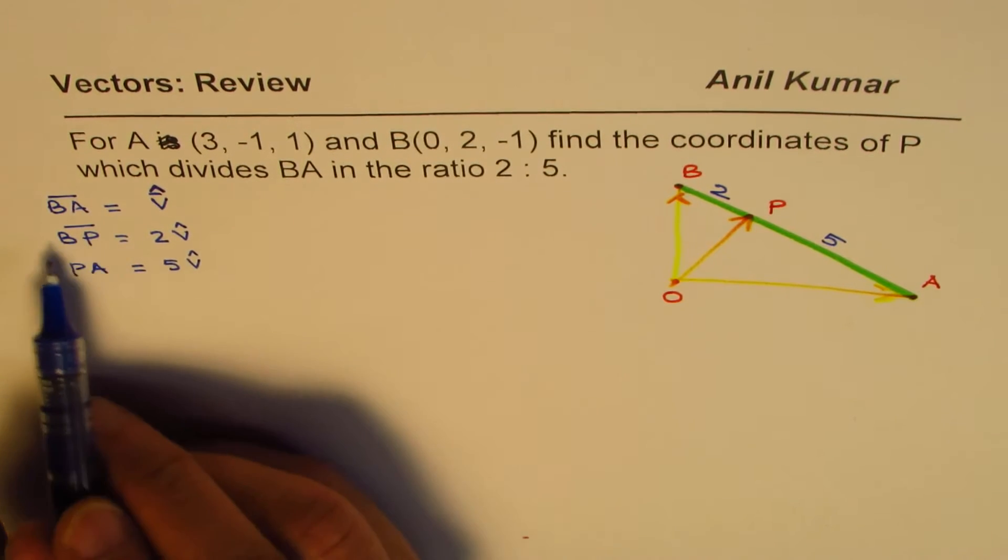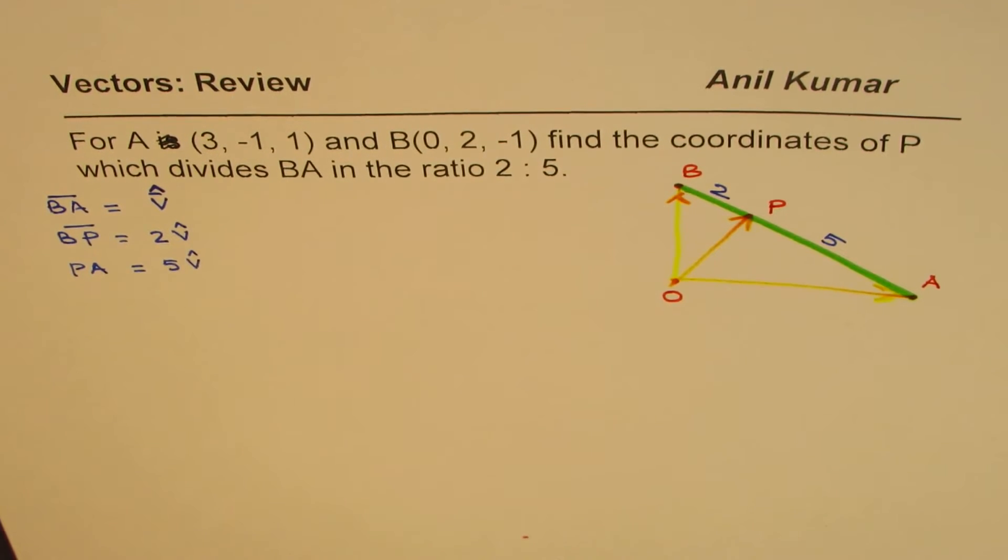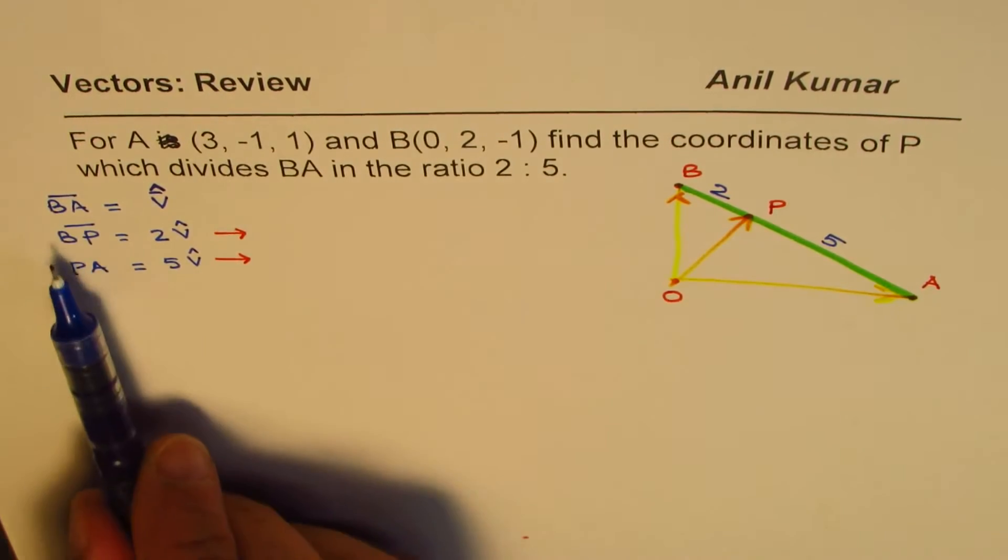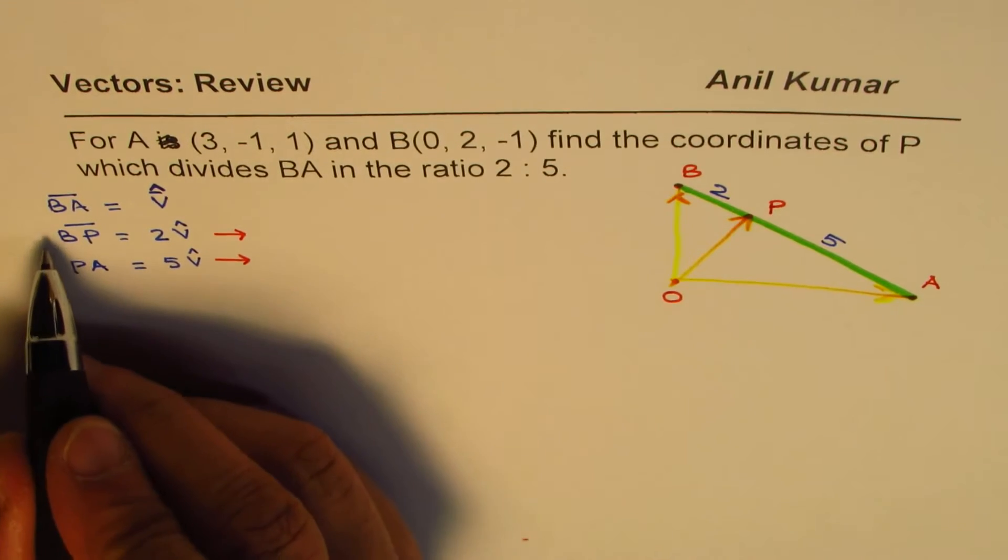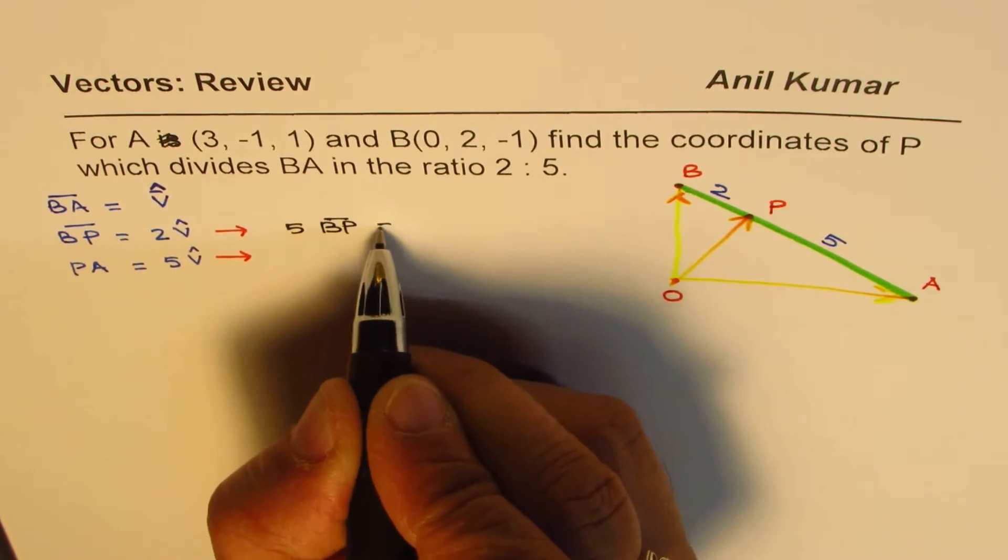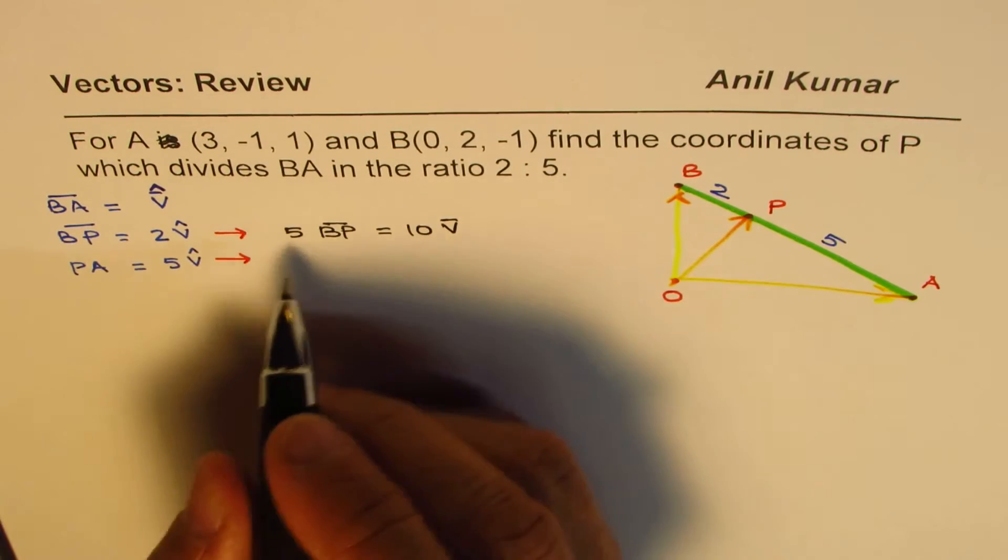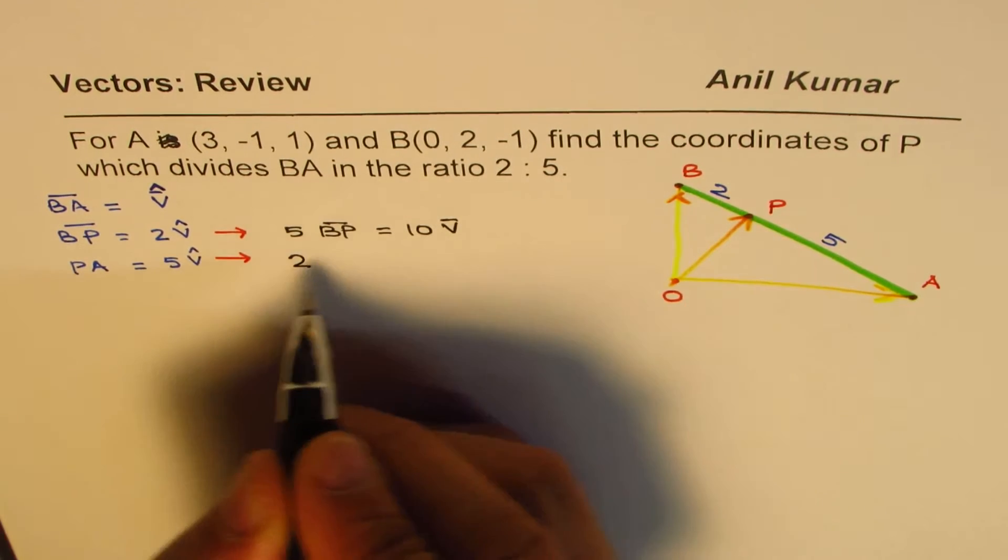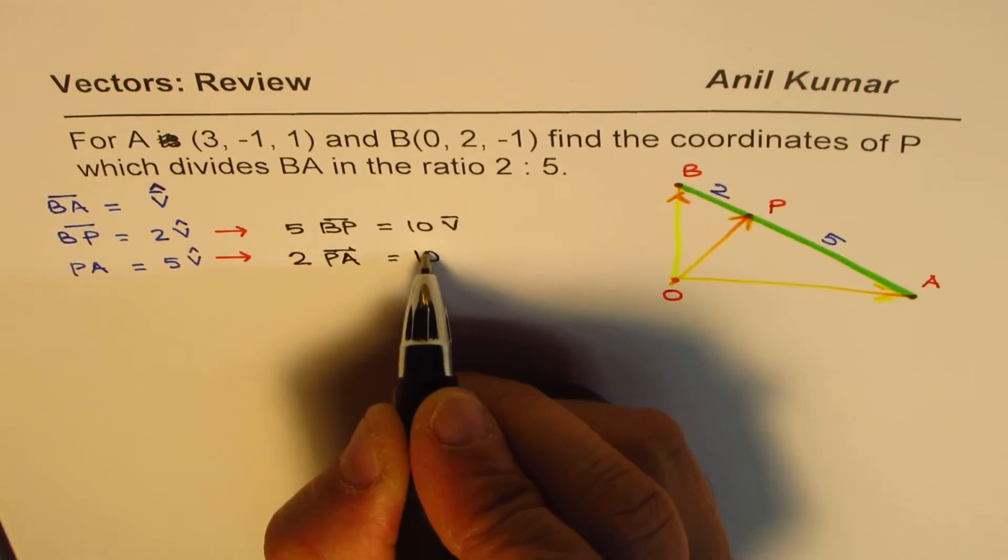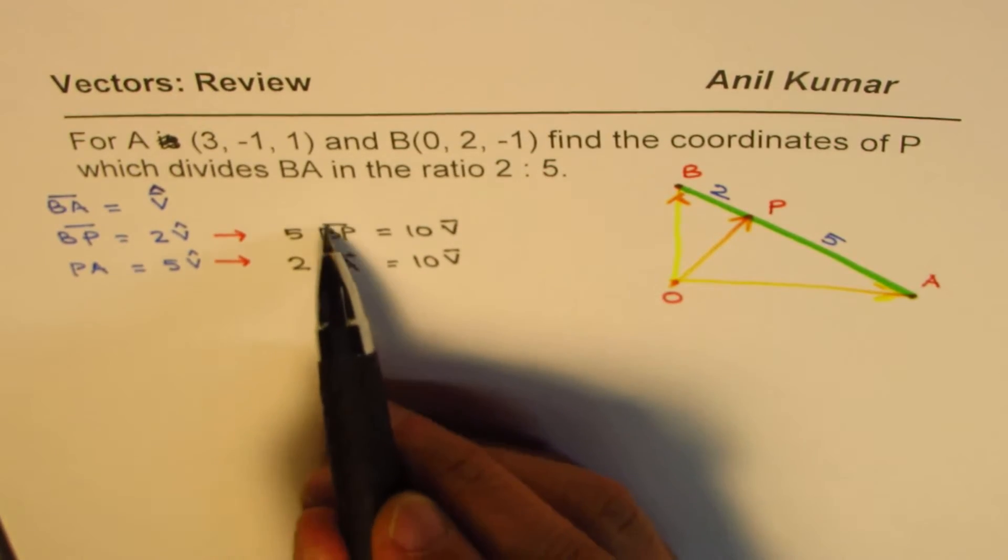Now, if I multiply the first equation by 5 and the second by 2, what happens? If I times the first equation by 5, 5 times BP equals 5 times 2 is 10V. And the second one, I get 2 times, if I multiply this one by 2, 2 times PA, we get 10V.